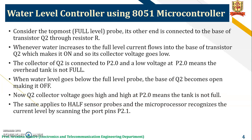Consider the topmost, that is the full level probe. Its other end is connected to the base of transistor Q2 through the resistor. Whenever the water increases to the full level, current flows into the base of transistor Q2, which makes it turn on and so its collector voltage goes low.